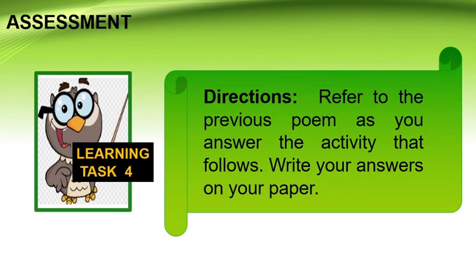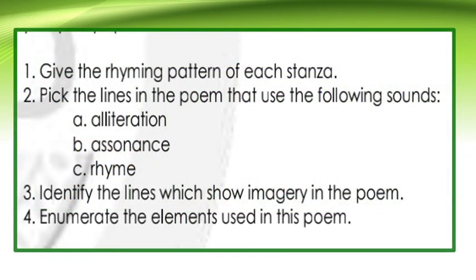This is your assessment — learning task 4. Refer to the previous poem as you answer the activity that follows. Write your answers on your paper. Question 1: Give the rhyming pattern of each stanza. Question 2: Pick the lines in the poem that use the following sounds: A. Alliteration, B. Assonance, C. Rhyme. Question 3: Identify the lines which show imagery in the poem. Question 4: Enumerate the elements used in this poem.